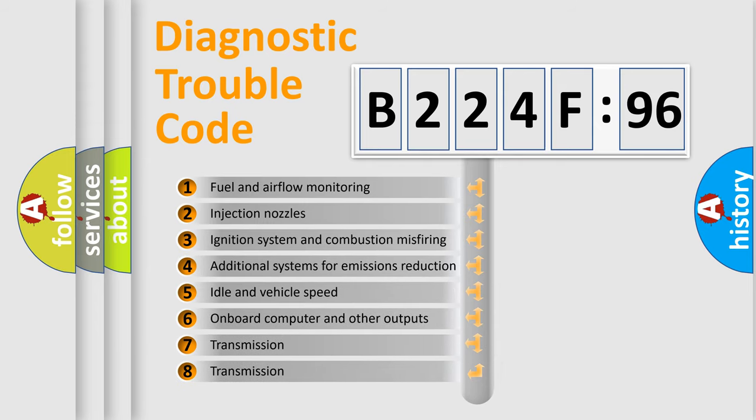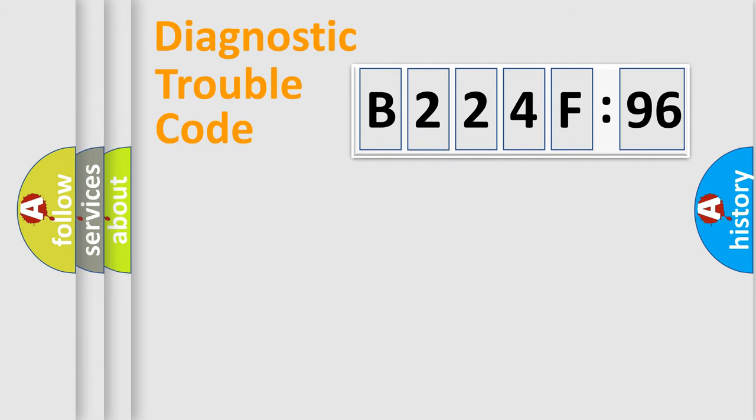The third character specifies a subset of errors. The distribution shown is valid only for the standardized DTC code. Only the last two characters define the specific fault of the group.